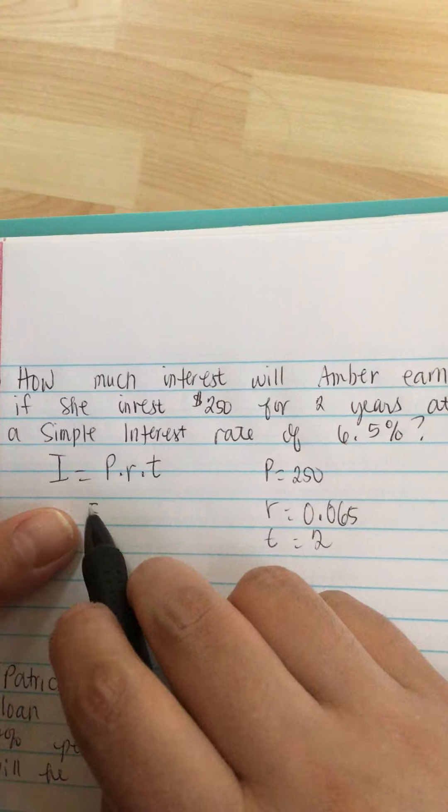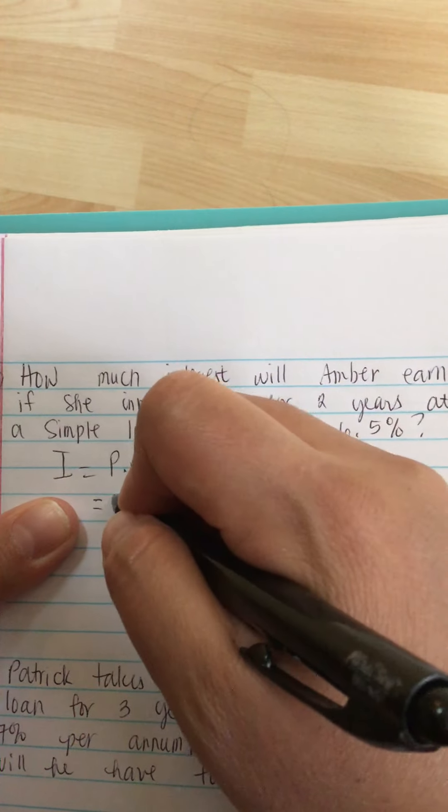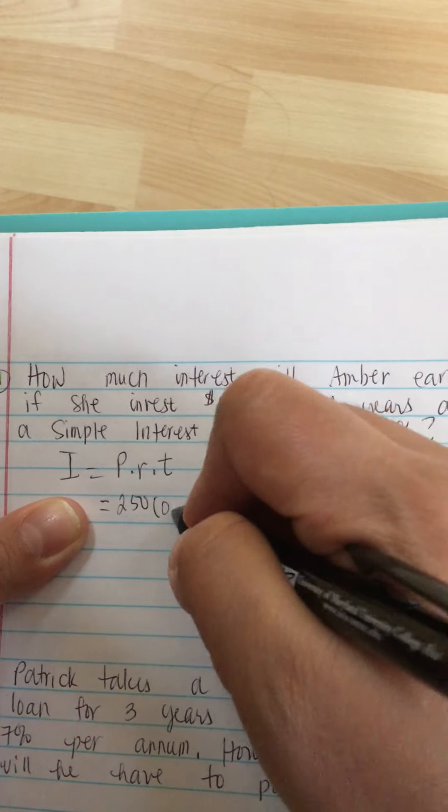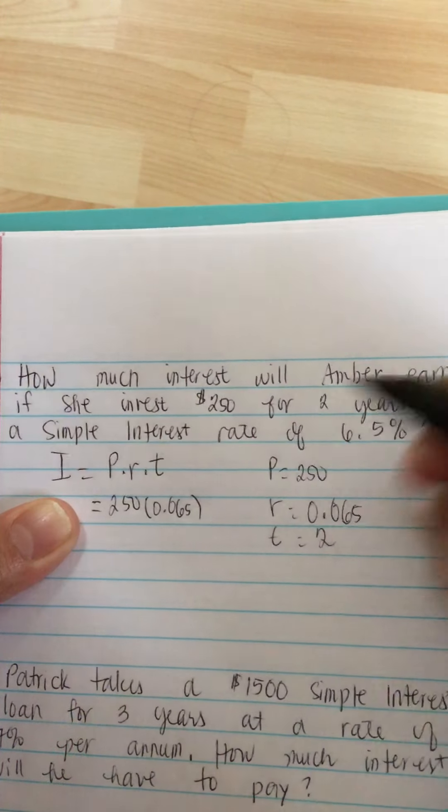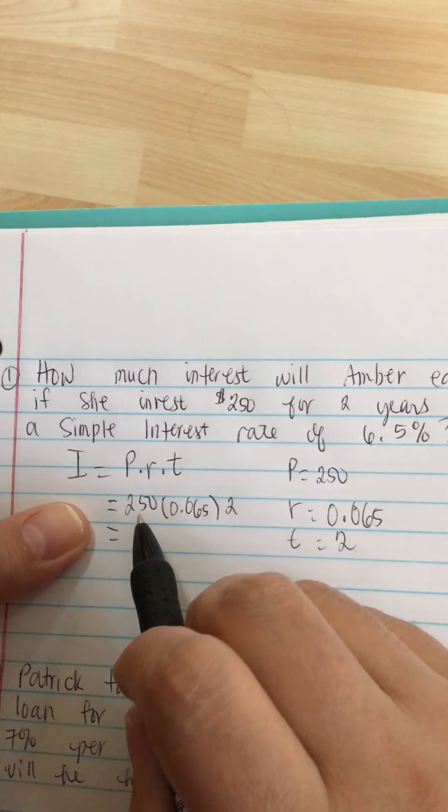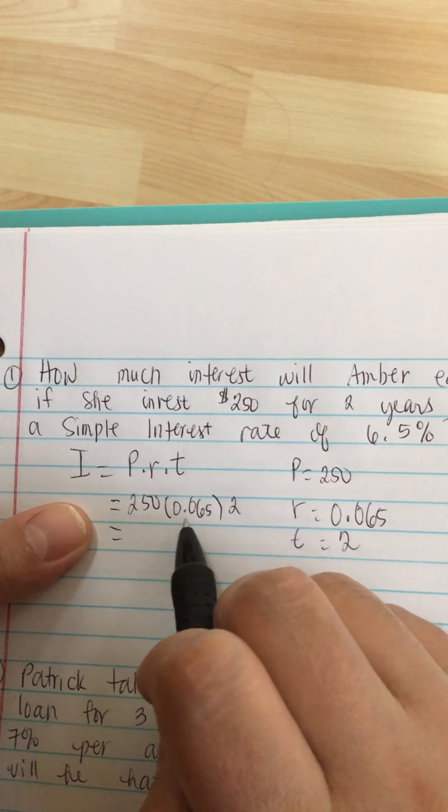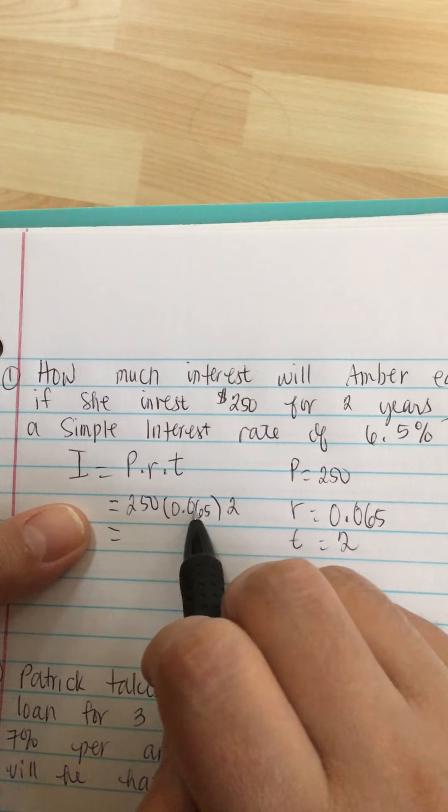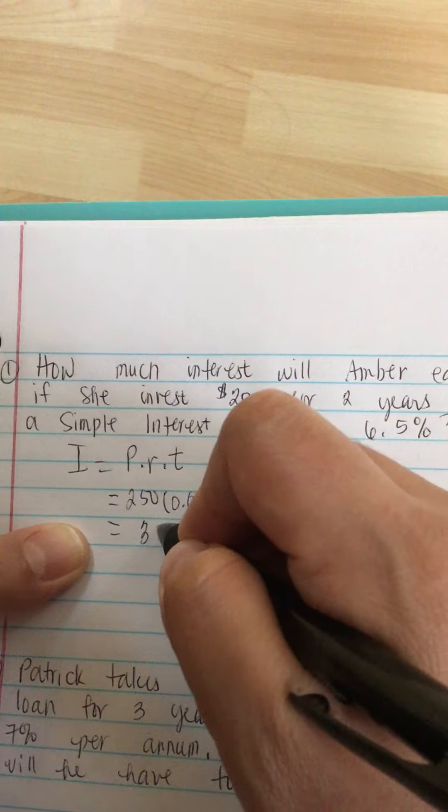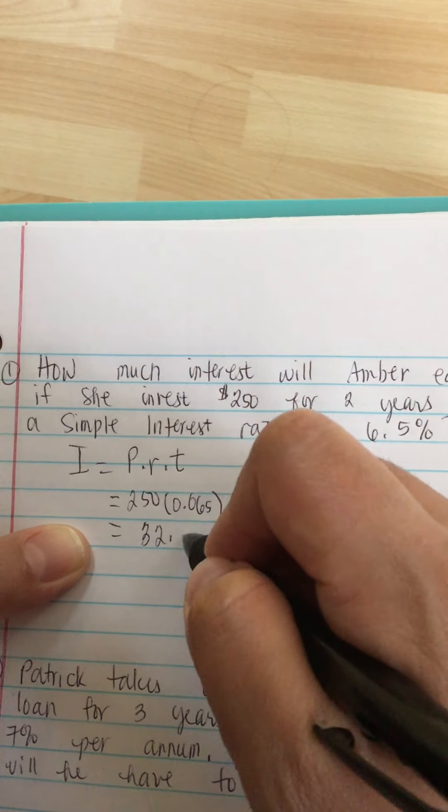Now we plug this in. So I is equal to $250 times R, 0.065 times 2. And this equals $250 times 0.065 times 2. It will be $32.50.